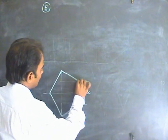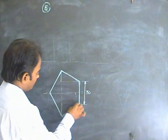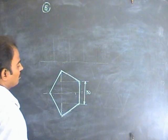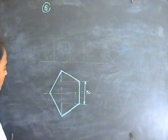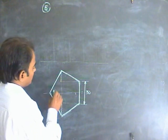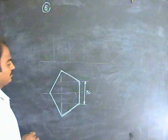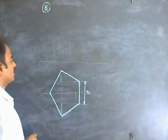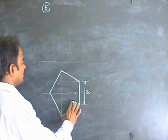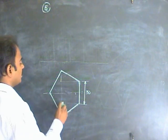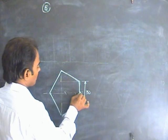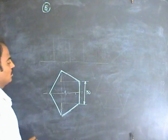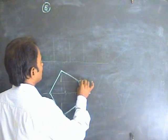All sides should be equal, and all included angles should be 108 degrees. If the pentagon does not look right, correct it. To mark the center of the pentagon, take this height, place it on the median line, and you will get the axis as well. Now project the front view.